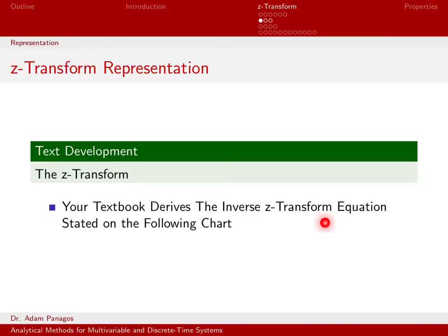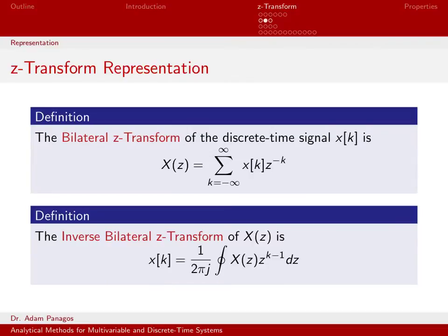We are going to state it on the following chart, but typically we're not going to explicitly evaluate this equation. We'll have other techniques that will allow us to go from the z-domain back to the time domain. So here's the definition — the z-transform representation — showing how we take a discrete time signal into the z-domain. The bilateral z-transform of the discrete time signal x of k is defined right here. This looks just like our definition of h of z, which was the sum from k equals minus infinity to infinity of h of k times z to the minus k.